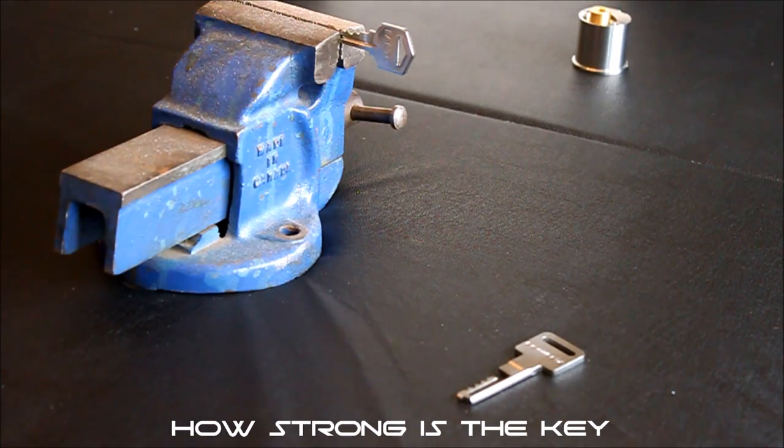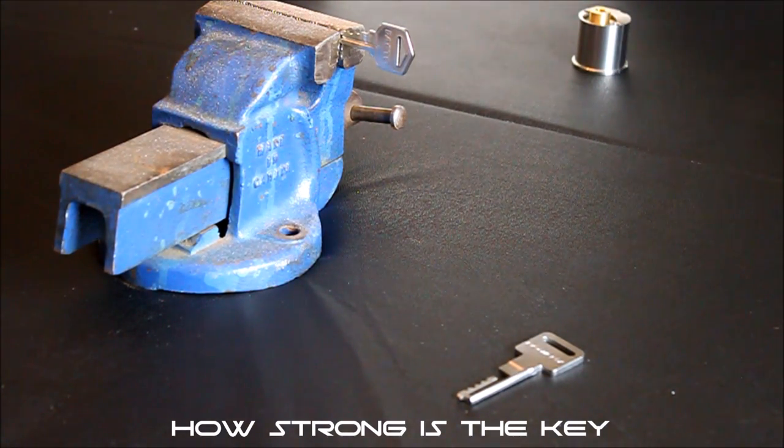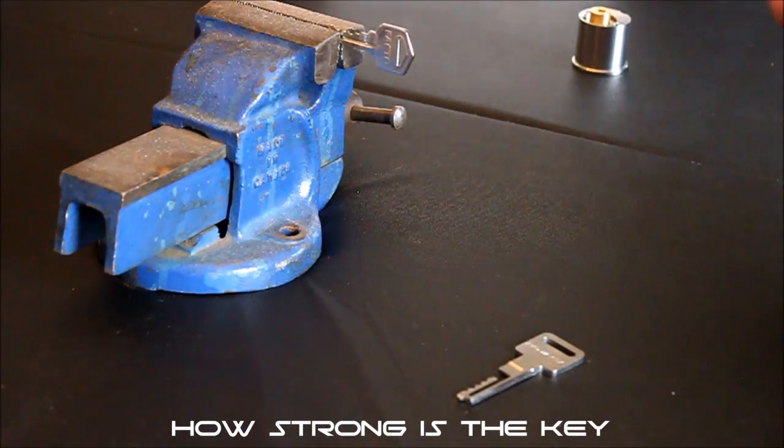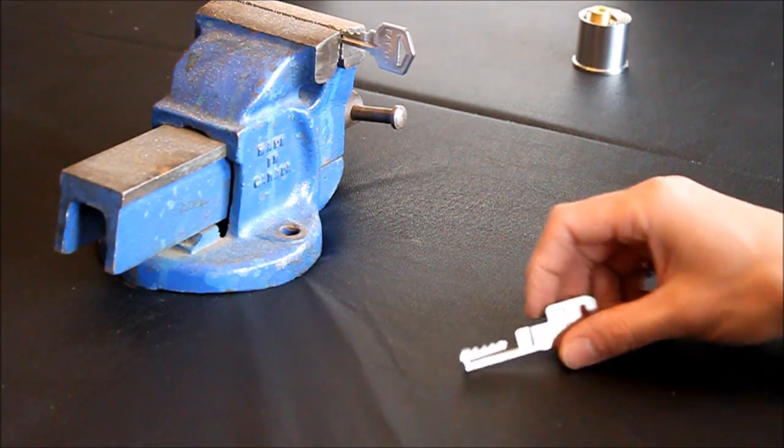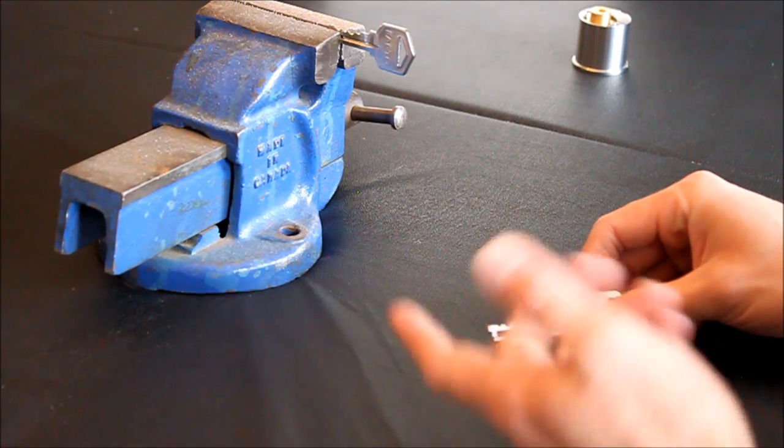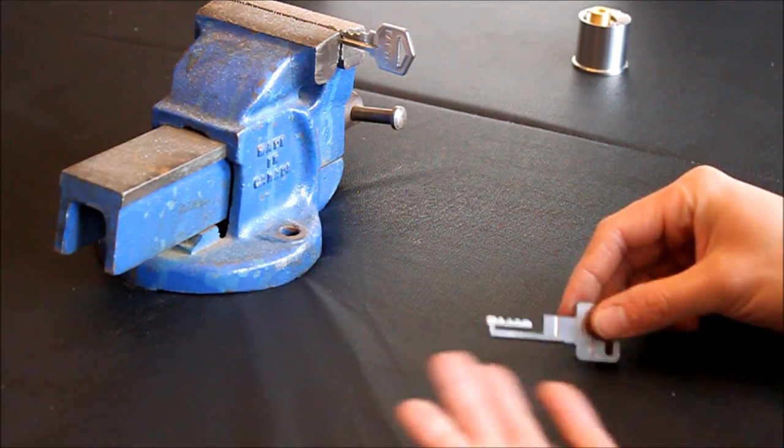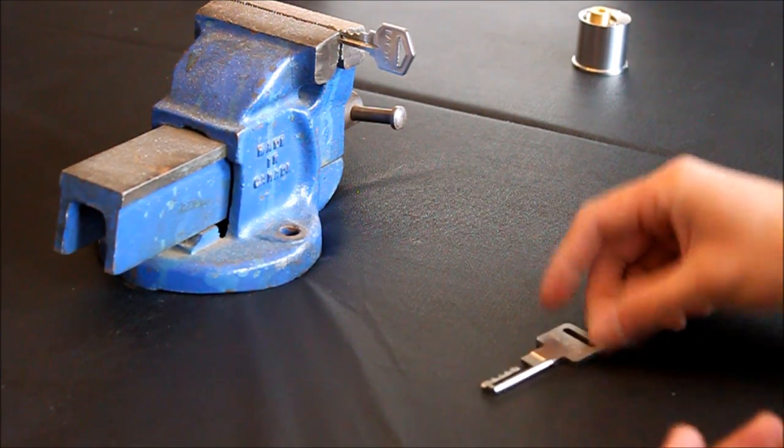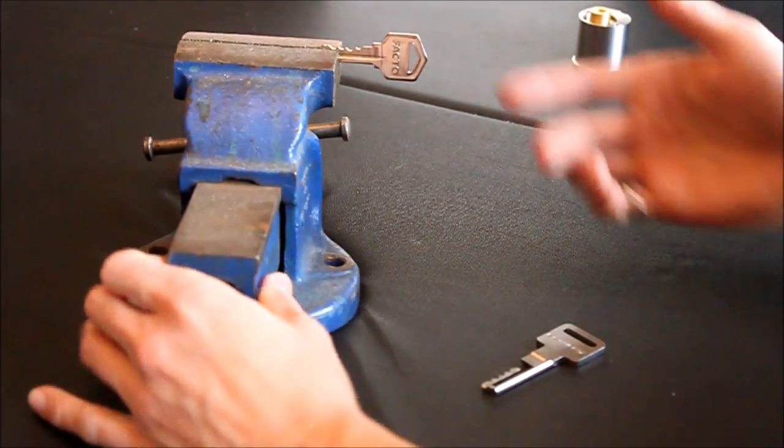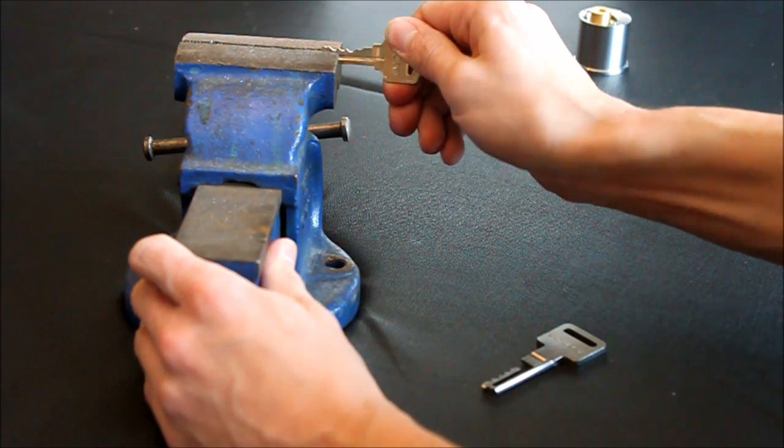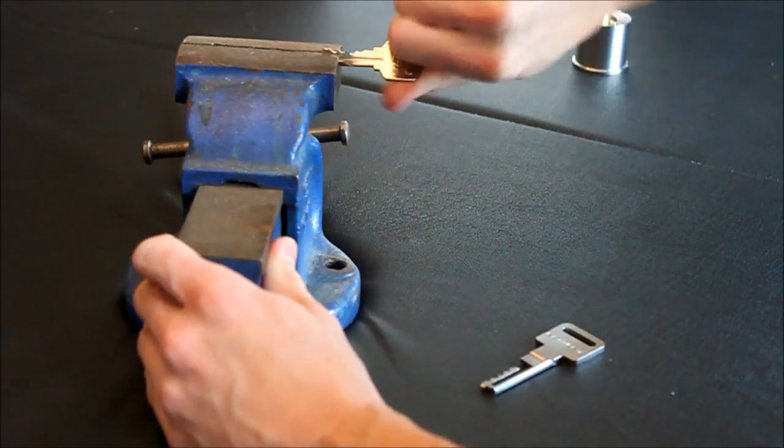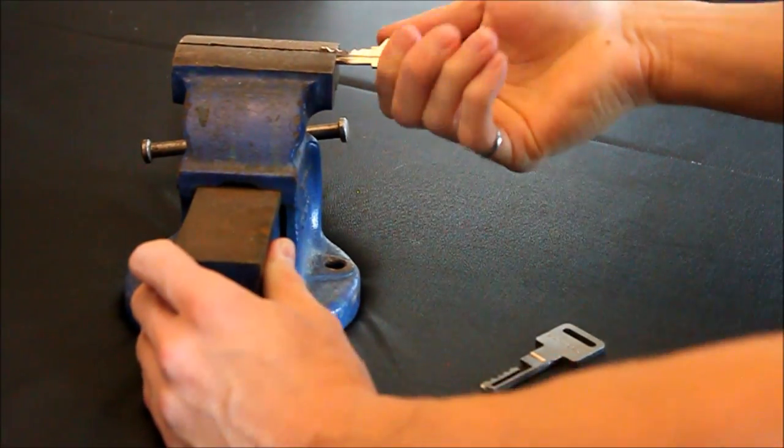Alright, so we're going to do a little test here to test the strength of our key because the most common concern we have when we show people the key is, is it going to break? With this notch cut out in it, it looks like it's a weaker key. So first of all, we're going to try to twist a standard door lock key that you buy at your hardware store. And as you can see, I can twist it pretty easily.